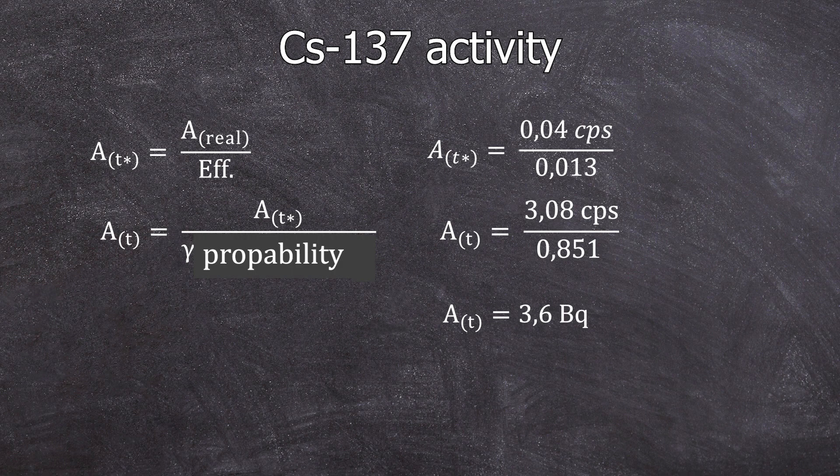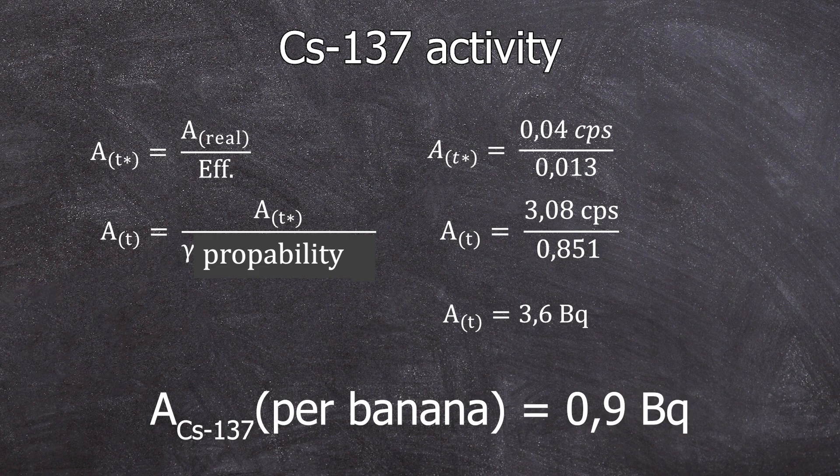Since the sample material came from four peeled bananas, the cesium-137 activity per banana is 0.9 becquerels.